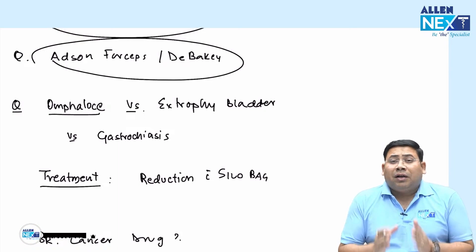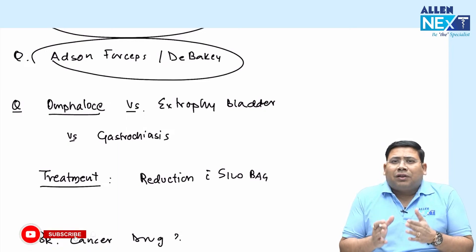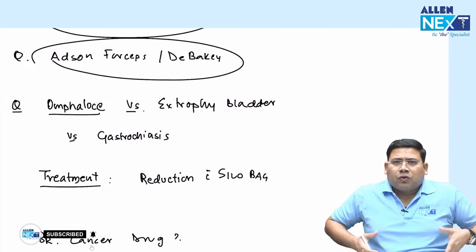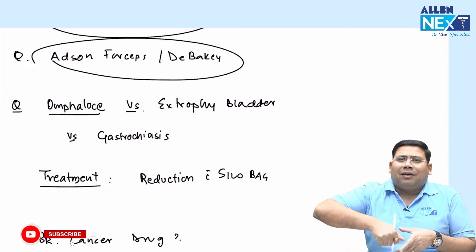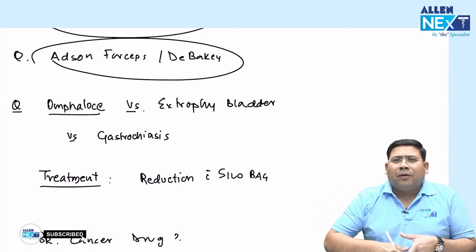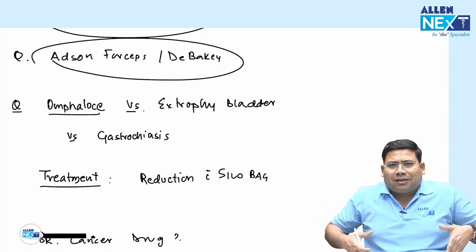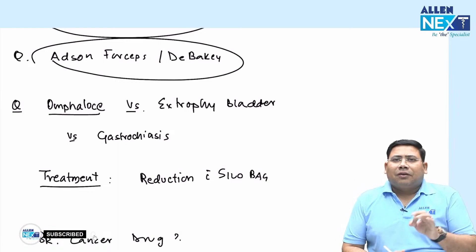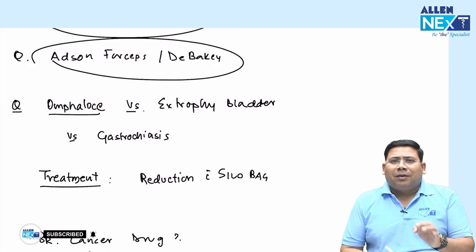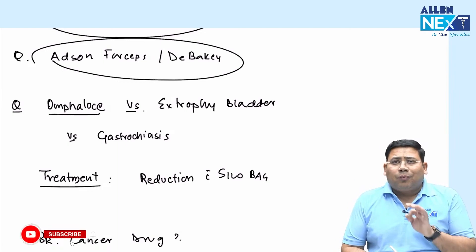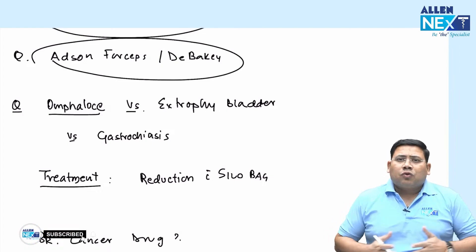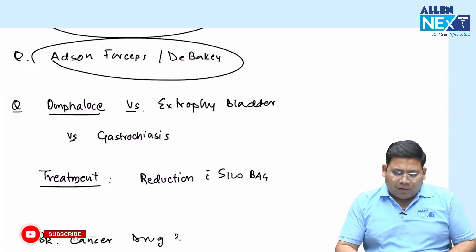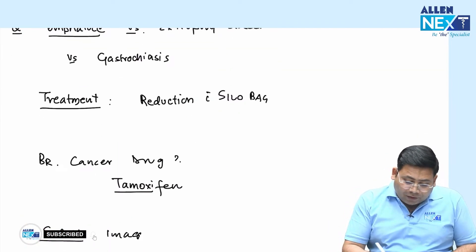There was a question on gastroschisis management. The initial management is gradual reduction with a silo bag — tie and suture a silo bag and reduce gradually. Once the traction reduces and it is reducible, go for primary approximation. The first-line goal is to prevent the bowel from hypothermia: put a silo bag, close it, tighten progressively, and reduce the bowel as much as possible.